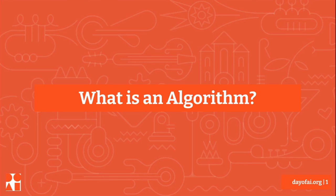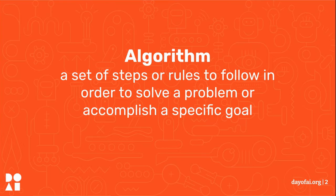What is an algorithm? What comes to your mind when you hear the word algorithm? An algorithm is a set of steps or rules to follow in order to solve a problem or accomplish a specific goal.